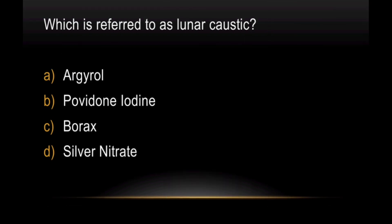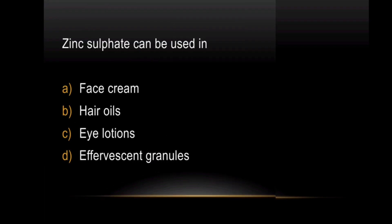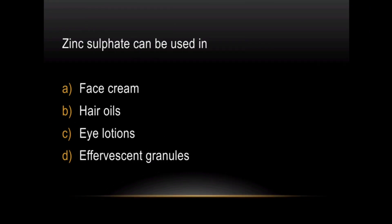Question: Which is referred to as Lunar Caustic? If you look at it, Silver Nitrate is referred to as Lunar Caustic. Question: Zinc Sulphate can be used in face cream, hair oils, eye lotions, or effervescent granules? It is used in eye lotions. Zinc in various formulations like zinc sulphate and zinc carbonate is used in cosmetics, but specifically for eye lotions it is Zinc Sulphate.